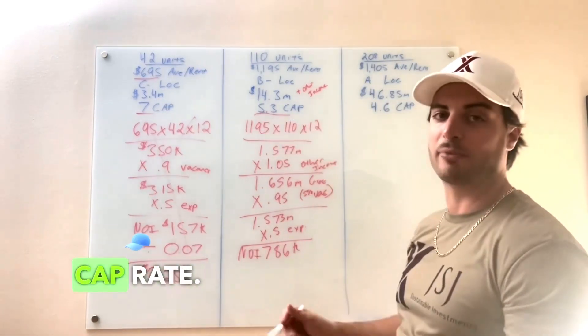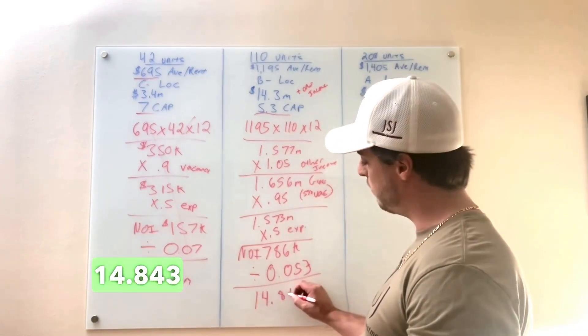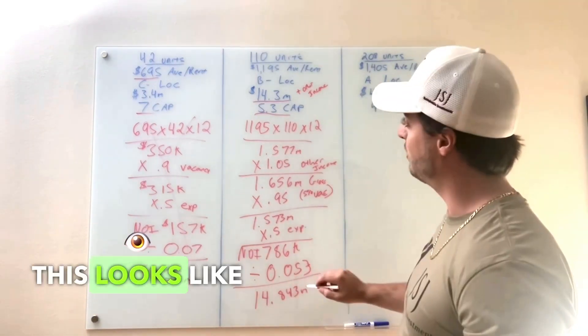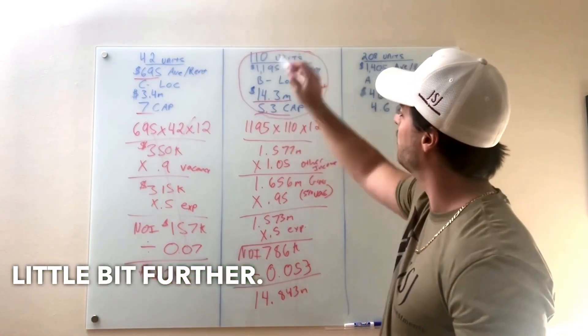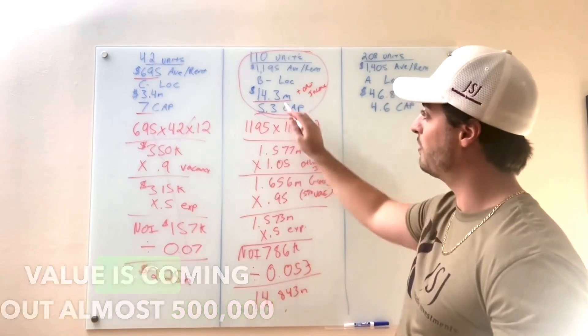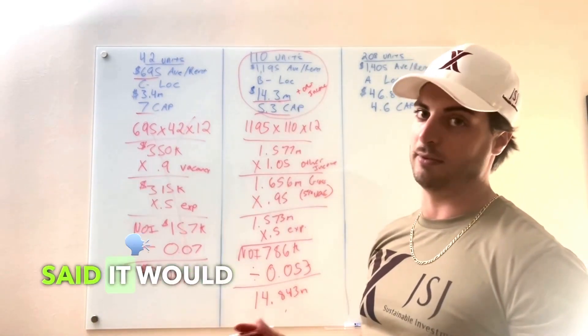Broker said it was a 5.3 cap rate. So at that cap rate, we come up with 14.843 million. This looks like a deal that we're going to pursue a little bit further, because its value is coming out almost $500,000 more than ask at the cap rate that the broker said it would trade at.